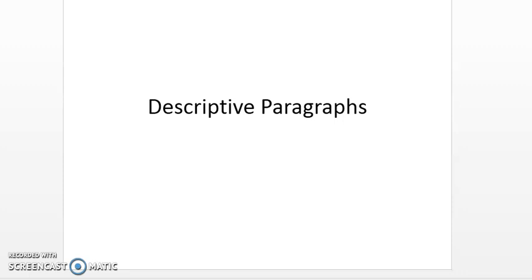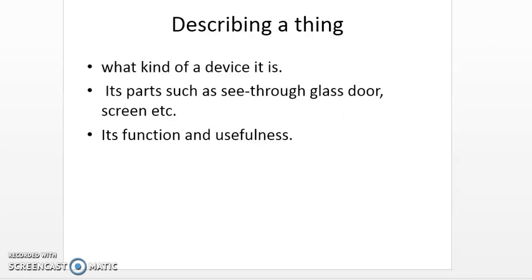Good evening class. This is my third lecture on descriptive paragraphs, wherein today I am going to talk about describing a thing or an object. In my earlier lectures I have already talked about how to describe a person or how to describe a place. So when you are describing a thing or an object, these are the three things that you must keep in mind: what kind of device it is, its parts such as a see-through glass door or a screen, and its function and usefulness.